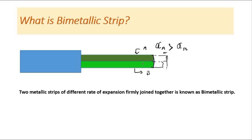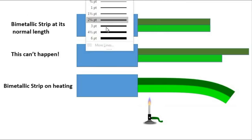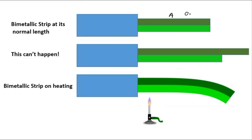What they can do is bend in order to show their different lengths after expansion — they have to bend. Now, in which direction will they bend? This is the bimetallic strip at its normal length. The upper metal is A with coefficient of linear expansion alpha A, and the lower metal is B with coefficient alpha B. We have assumed that alpha A is larger than alpha B, so the upper metal is going to become longer than the lower metal, which is not allowed since their ends must always be joined. When we heat, this is the actual scenario.